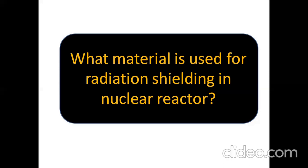What material is used for radiation shielding? Lead metal is the preferred material. Lead is highly effective in providing protection from sources of radiation and is a standard used in the design of radiation protection systems for nuclear power plants. Lead is a common shielding material with a high density of around 11.3 grams per centimeter cube, and is widely used due to its low cost and easy availability.